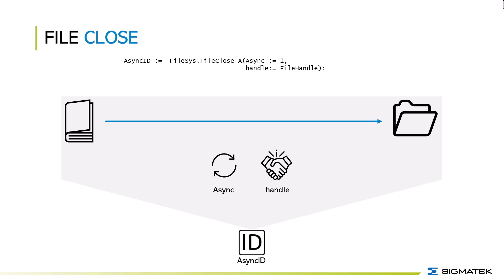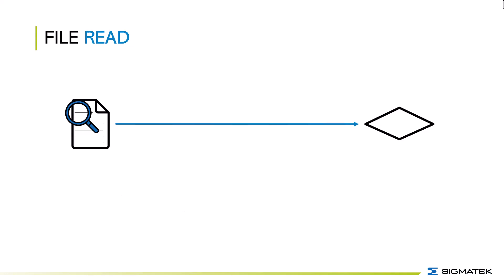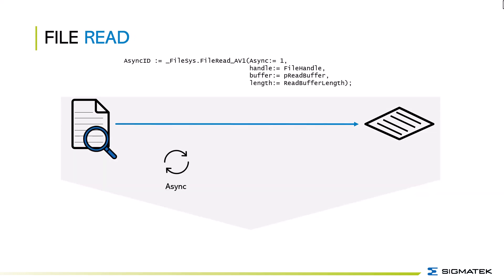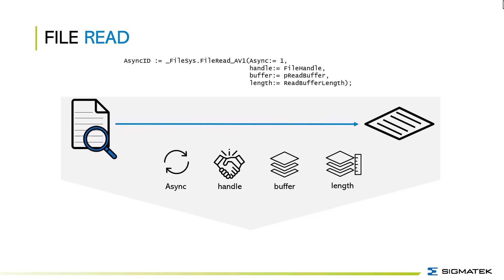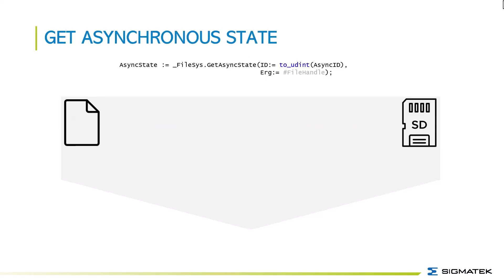If you want to read a file you use the file_read_av1 function, set up as an asynchronous function. The next parameter is the file handle so the system knows which file to read. Set up a buffer where you want to write the data into, and at last the buffer length must be given. For the asynchronous task we need to know its status before we can switch to the next asynchronous function.